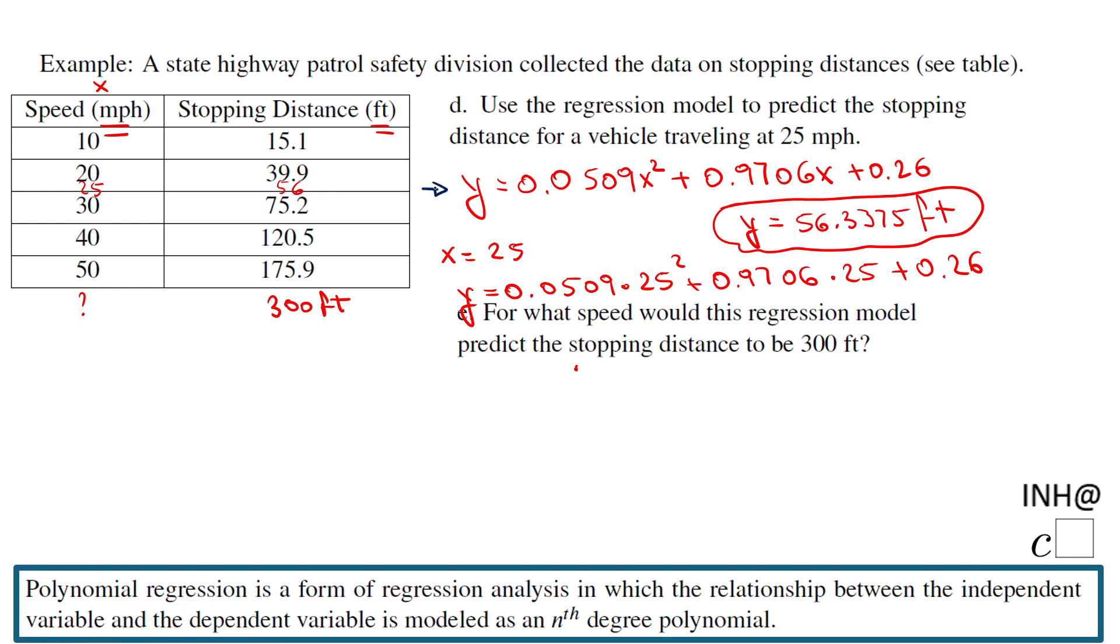So basically now we're going to use this model we have here and we're going to replace y with 300. So we're going to have 300 equals 0.0509 x square plus 0.9706 x plus 0.26. This is a quadratic equation, it's very unfriendly, but it's a quadratic equation. My first thing will be to make it equal to 0 on the left side by subtracting 300.